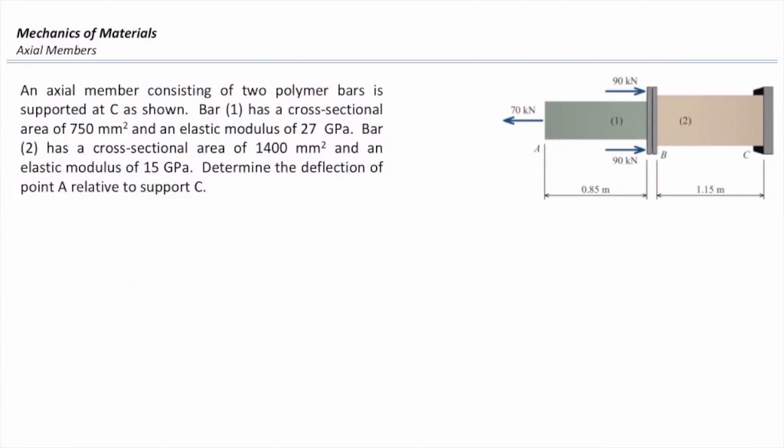So here we are looking for how much is the total change in the position of A with respect to the support, which is point C. In other words, we need to see how much is the total change of length of that system. The right part of that system is fixed, the left part is moving. So I need to determine the change in the length of each of these two elements and then add them together.